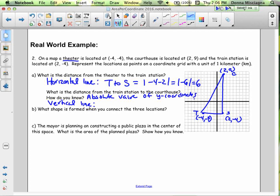So here we're finding train station to courthouse. That's going to be negative 4 minus 9, which is the absolute value of negative 13, which is just 13.